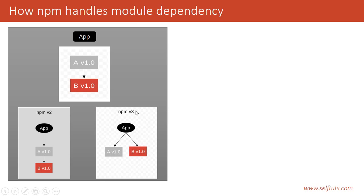In NPM version 3, inside the app folder a single node_modules folder is created, and at the same sibling level both module A and module B are installed. B is not installed inside the node_modules folder of A. Only one node_modules folder is created inside the app folder, and both A and B are placed there. This is called flattening of the dependency.